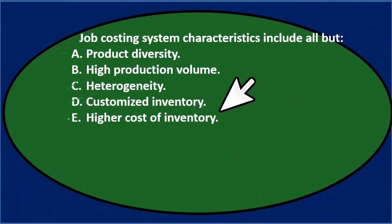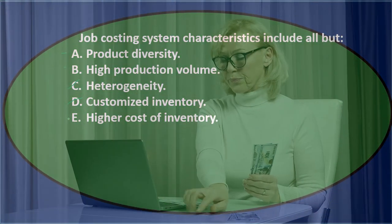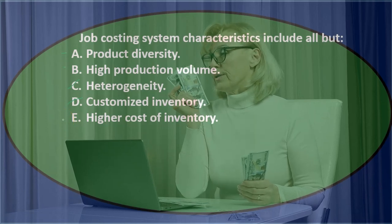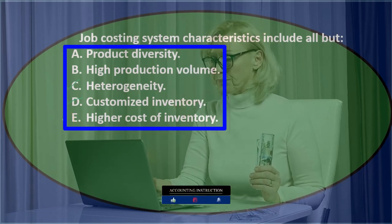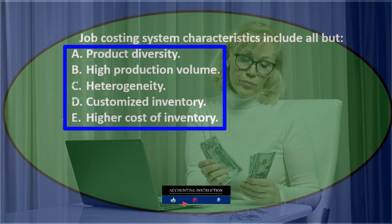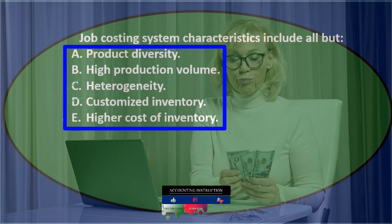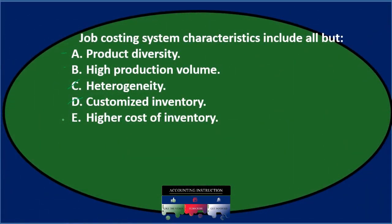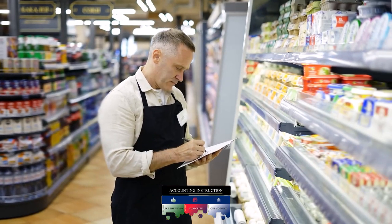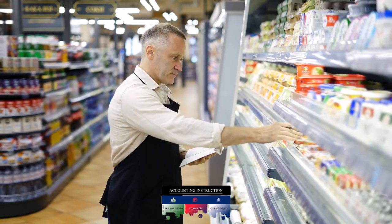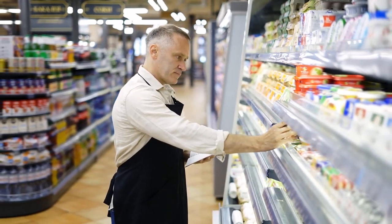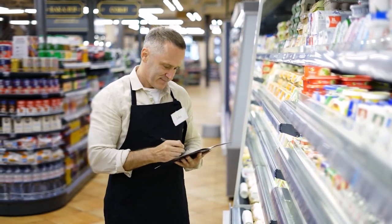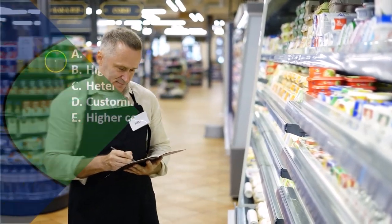Option E, higher cost of inventory — these characteristics all follow from the concept that we'll have more differentiation in products. If products are more customized, of course we're going to have higher prices. In comparison, a process cost system aims to lower prices and costs by making everything the same, so a job cost system will typically have higher prices.